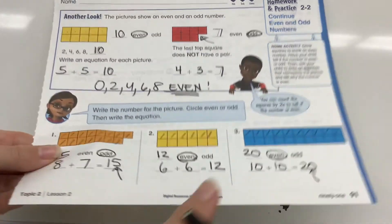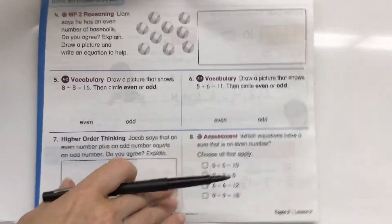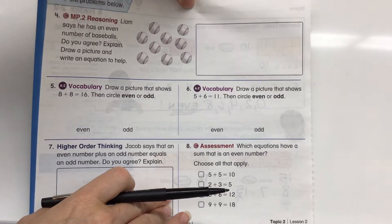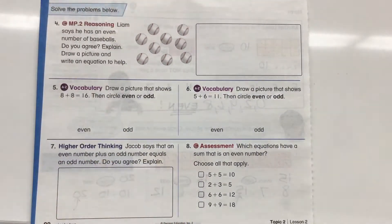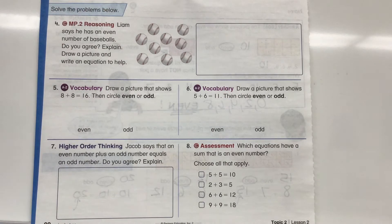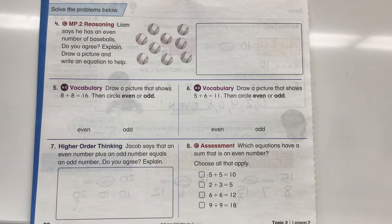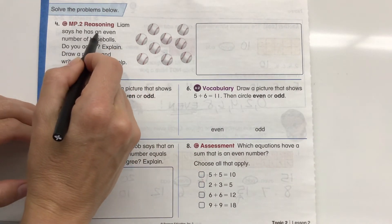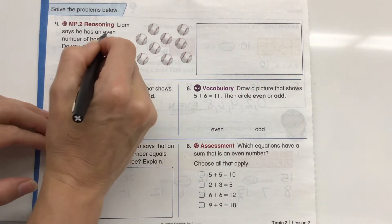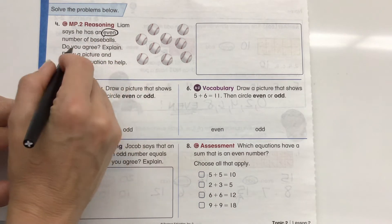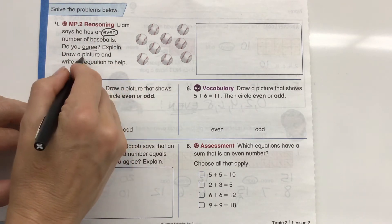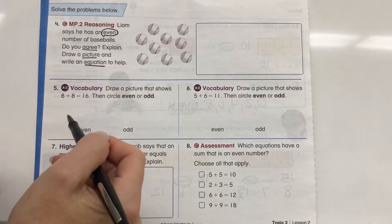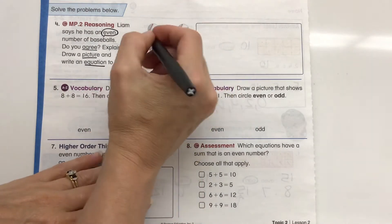All right. Let's flip it over and take a look at the back page. And again, you can pause the video as needed if you need a little bit more time. Ooh, word problems, my favorite. All right. Let's figure out what they're asking us. Liam says he has an even number of baseballs. So he says he has an even number. Do I agree? Explain, draw a picture, and we're going to write an equation.